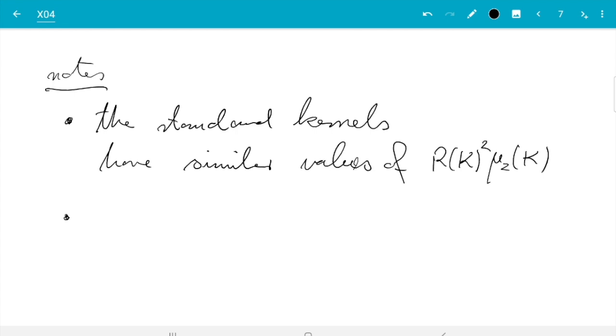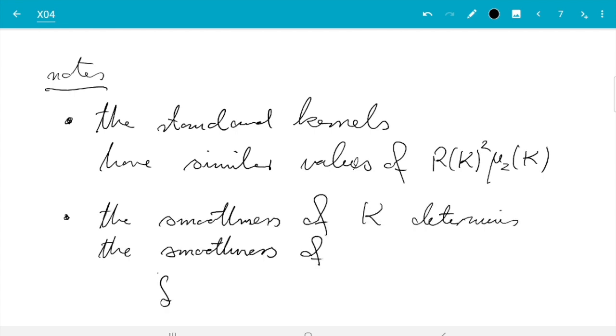just because the smoothness of the estimate is given by the smoothness of k. So smoothness of k determines the smoothness of the estimated f̂ₕ(x), which is 1 over n sum i from 1 to n kₕ(x - xᵢ). And from this formula, you see immediately, if k is discontinuous, then f̂ will be discontinuous. So the uniform kernel will give us discontinuous f̂. And if k is differentiable, then kₕ will be differentiable, and then f̂ will be differentiable.